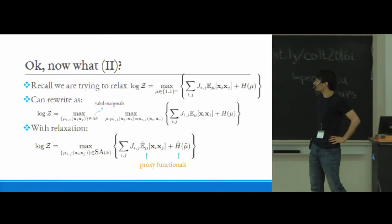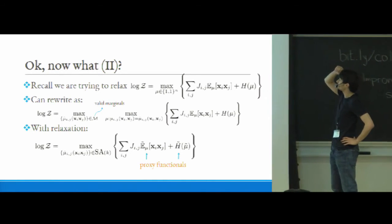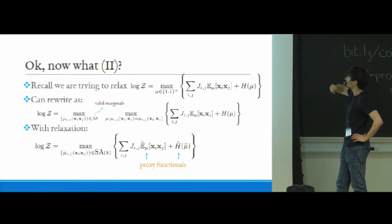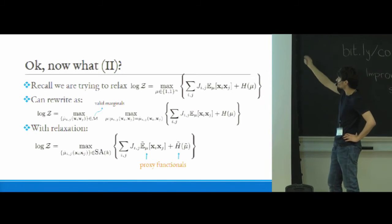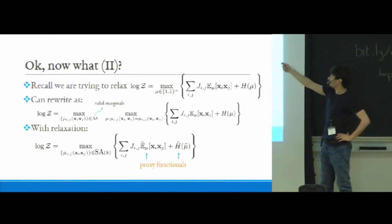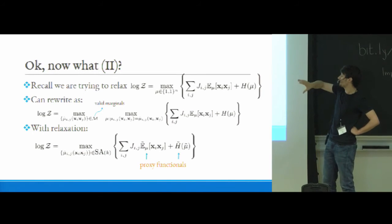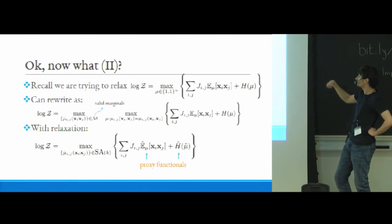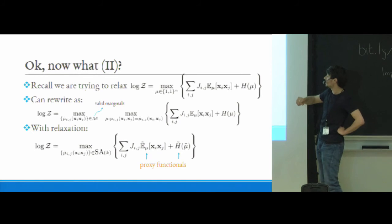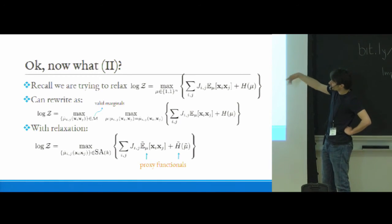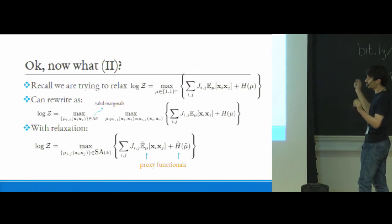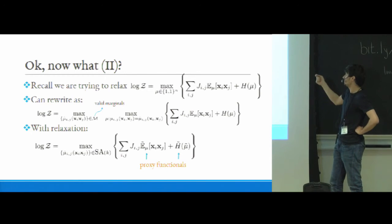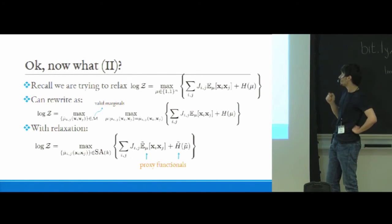So now where are we at? So recall what we're trying to do is that we're trying to relax this maximization problem over the hypercube. So now what I'm going to do is I'm going to change a little bit how that maximization is done. So first I'm going to maximize over the values of the pairwise marginals, and then I'm going to maximize over all distributions which match those marginals, and then I'm leaving the same expression inside the brackets. So now contrast this to what happens when you do the relaxation. So when you have the relaxation, what you'll have is a maximization over some variables which are some tentative marginals that may or may not come from a valid distribution over the hypercube. The second maximization basically disappears.